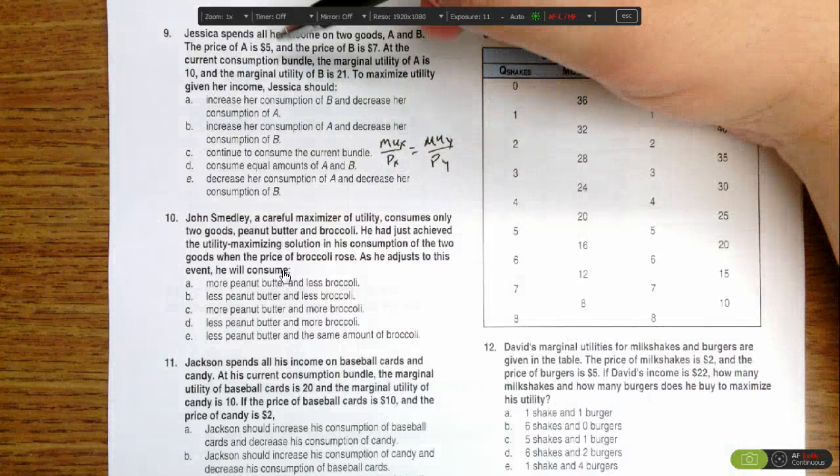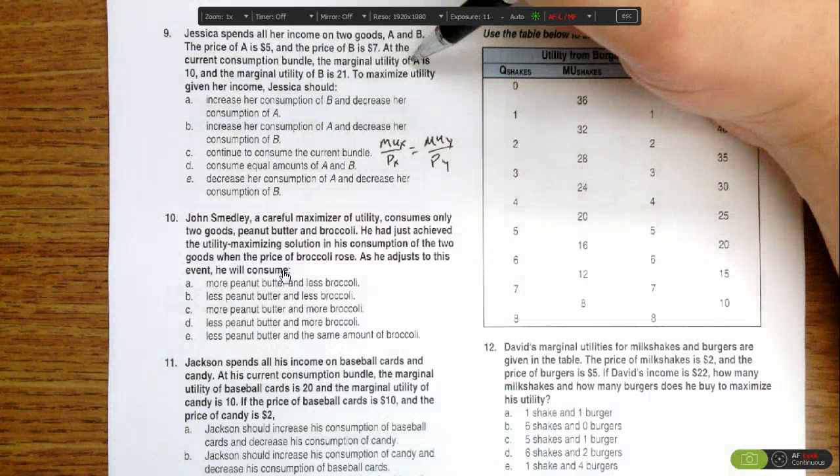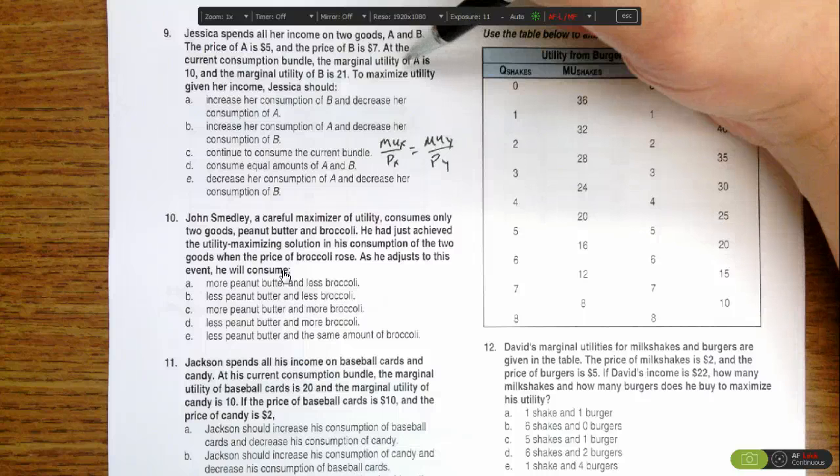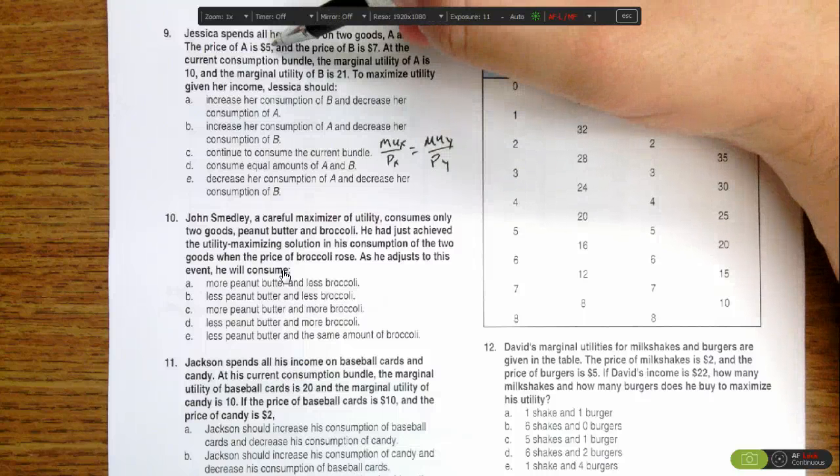In this case, the marginal utility of the last good she got for A was 10 and the price was 5. So her marginal utility per dollar spent for A is 2.